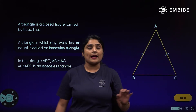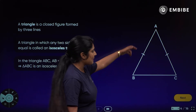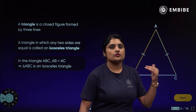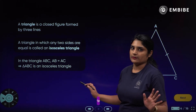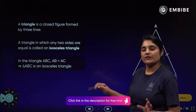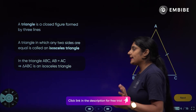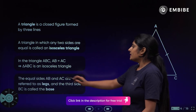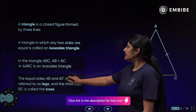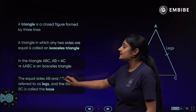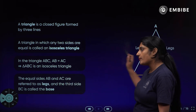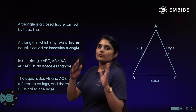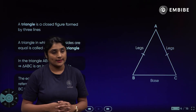In triangle ABC, aapko diyaan pe ek example diya hai — ABC mein AB is equal to AC, so this will be an isosceles triangle. Triangle ABC will be an isosceles triangle. The equal sides AB and AC are referred to as legs — unko hum legs consider kerti hai, jo sides equal holti hai.